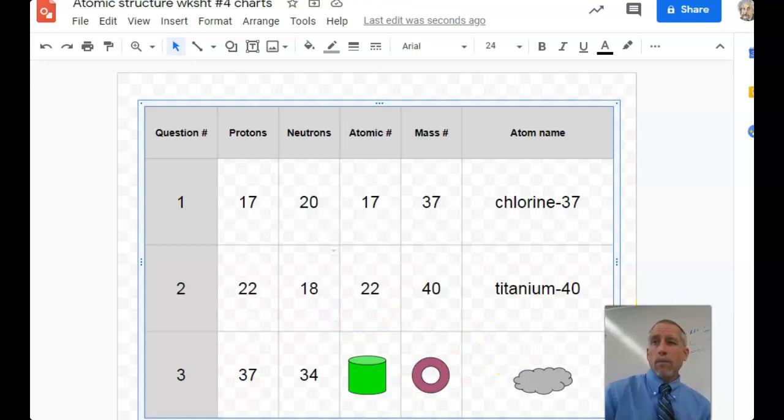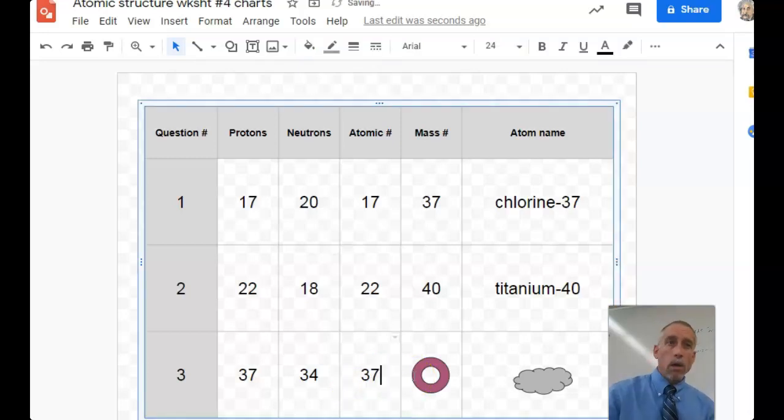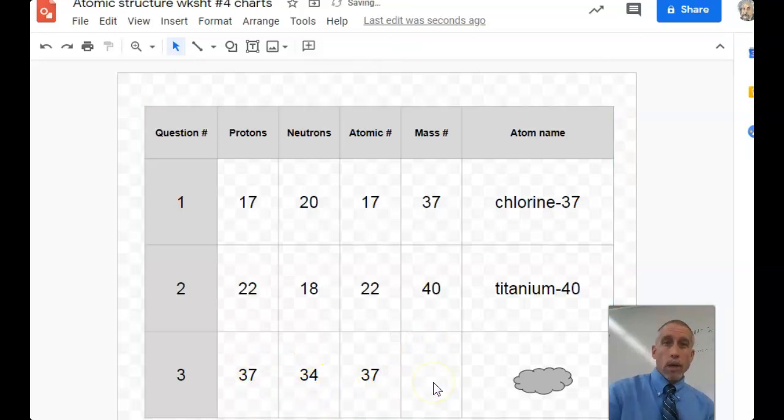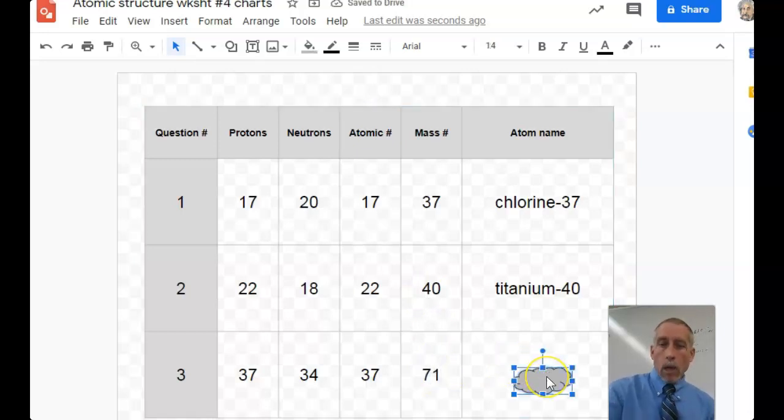And finally, if we have protons and neutrons, we can start a couple of different ways here. First, the atomic number will always be the proton number. So we can match that here. And the mass number is the sum of protons and neutrons combined. So we can add those up. Notice this time we're doing addition because we have the two numbers to start with. Whereas on this previous two, we were subtracting the protons from the mass number to get the neutrons. So 37 and 34 adds up to be 71.